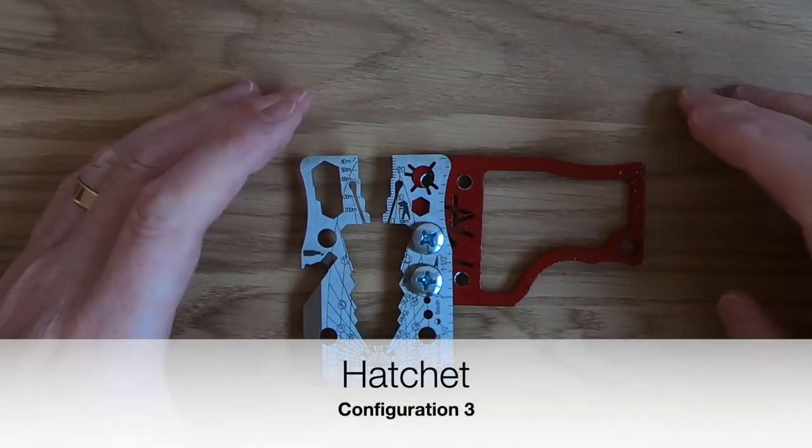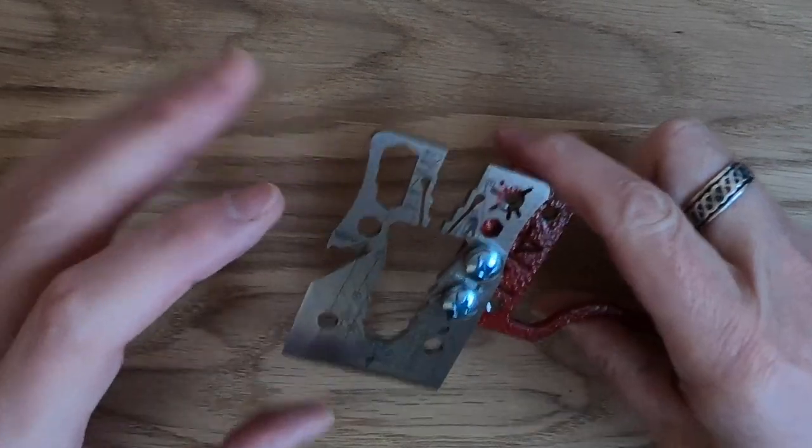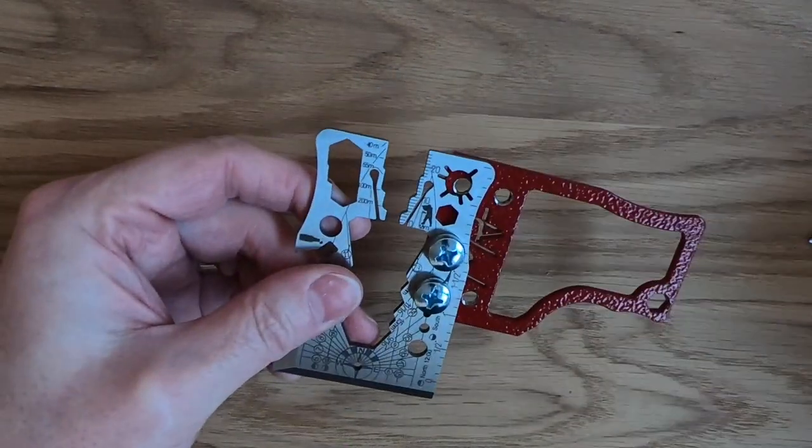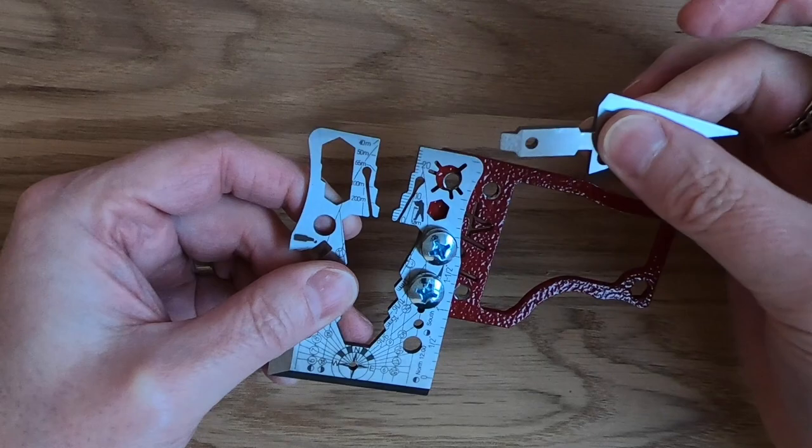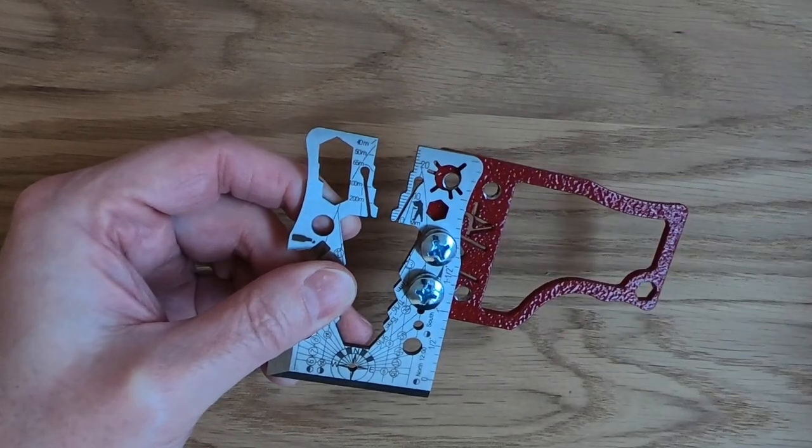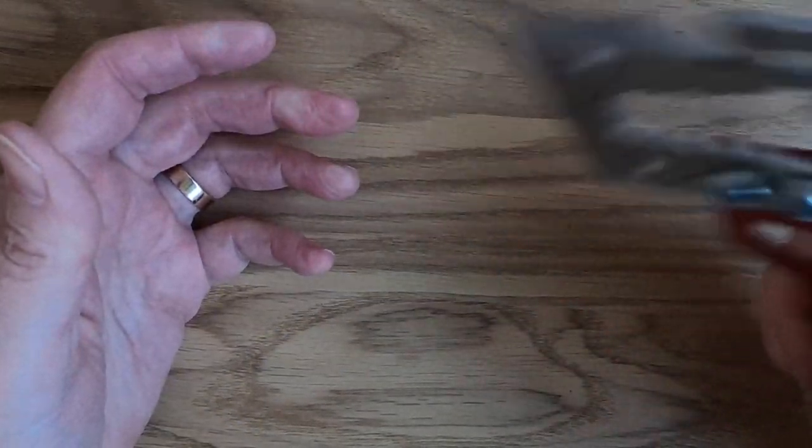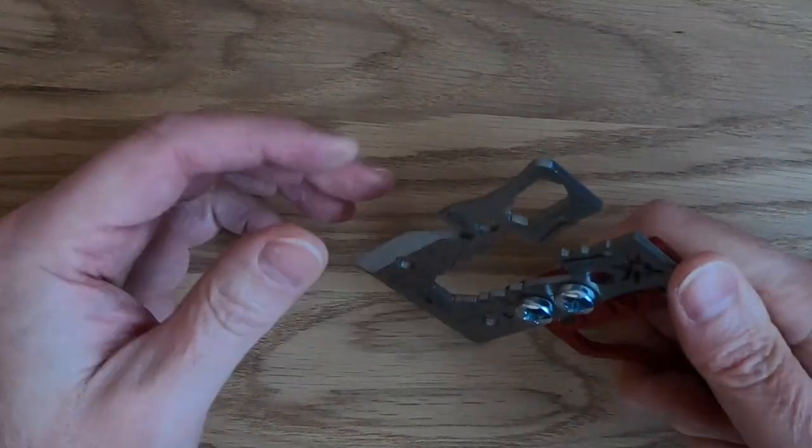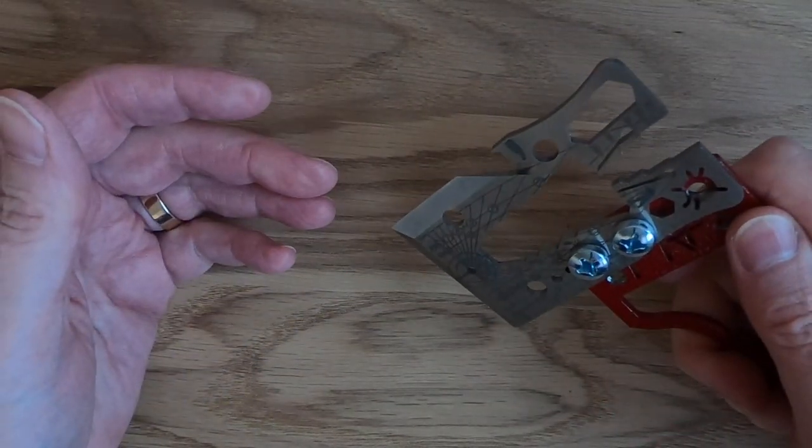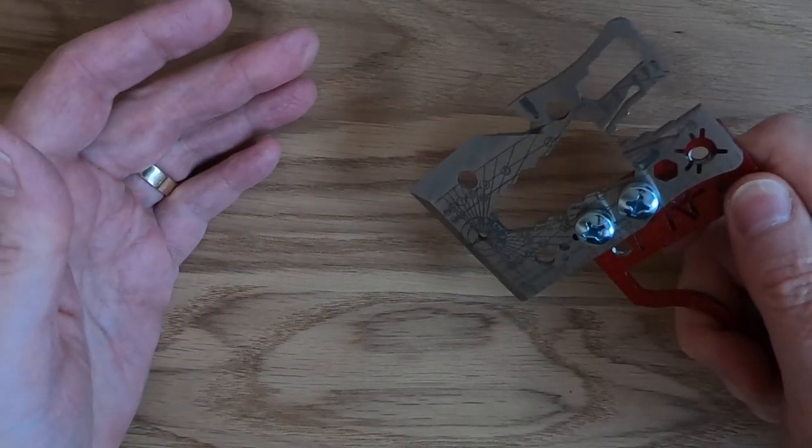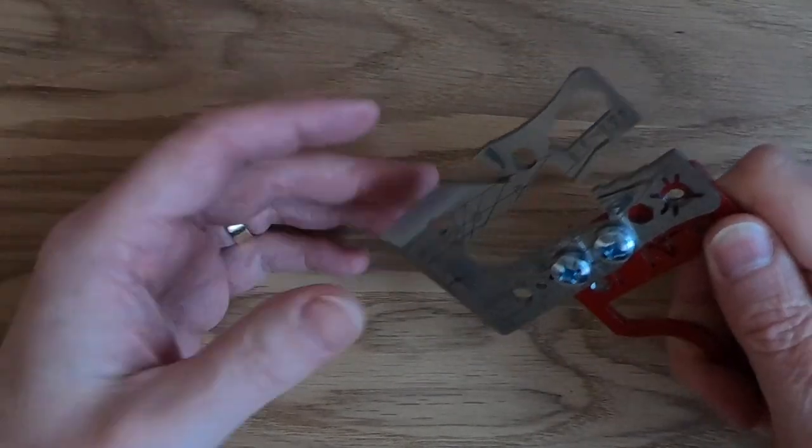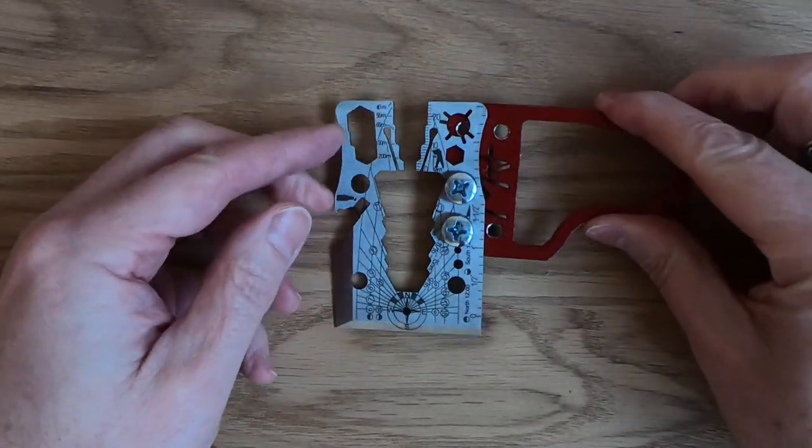Next up we have the hatchet assembly. You can see just by moving these two screws by using this screwdriver on the end of that arrowhead here, you can reconfigure this to make a hatchet. So you can actually use this for chopping wood. The handle is pretty comfortable, it's not too bad. It's better than holding onto the actual tool itself, gives you a bit of purchase. So that's your hatchet assembly.